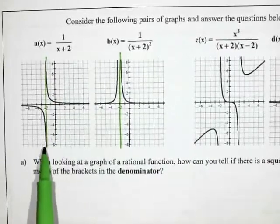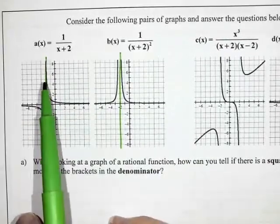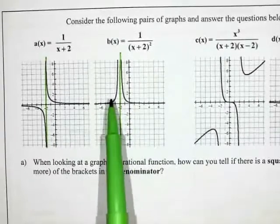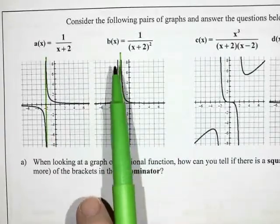But what's different is what the ends are doing. So when I look at this one, one of the ends is going down, one of the ends is going up. But on this one, both of the ends are pointing up.